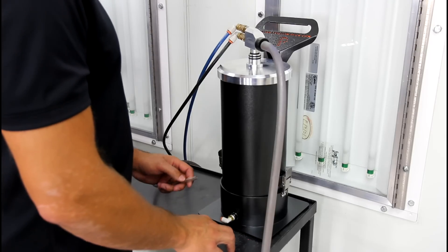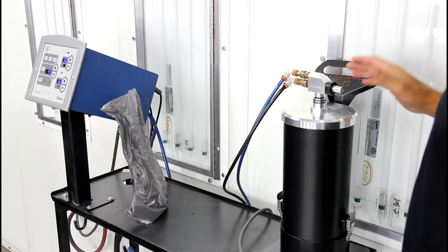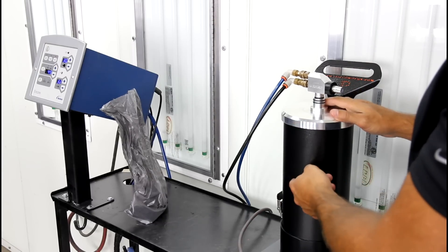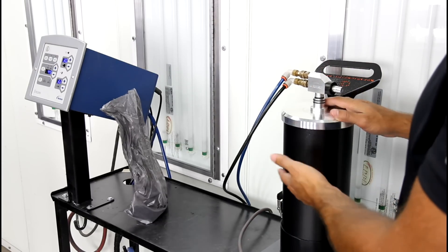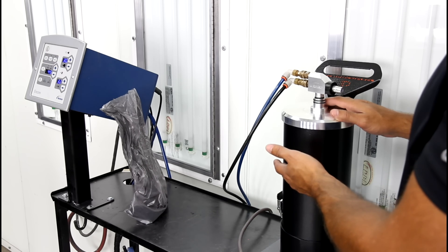For hookup, you simply attach your quarter inch line. It can be helpful to already have the air running to the fluidizer so you can fluidize the powder as you add it, versus trying to fluidize a whole load all at once.